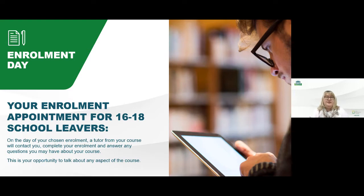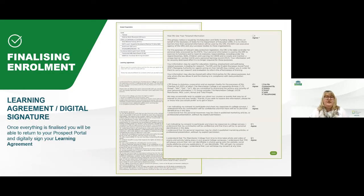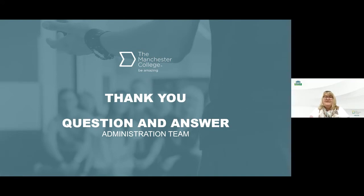On the day the tutor will contact you, talk through the course and your grades, and ensure that everything is still correct for you. If you didn't get the grades you wanted or you have better grades, we will ensure we get you on the right course for you. Please don't worry — our dedicated tutor will have the experience and knowledge to ensure you get onto the right course that best suits your grades. Once you've completed that with the tutor we'll ask you to log back into your enrolment portal and you'll see the study programme you've been enrolled on and the learning agreement you're signing up to. Once you're happy with everything you'll tick the boxes to agree and sign to say that you're happy with the enrolment. And once that's completed, that's you fully enrolled.